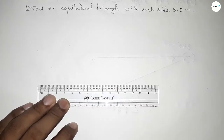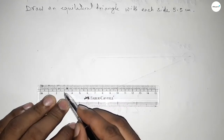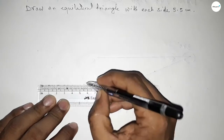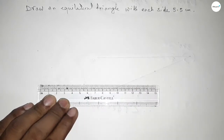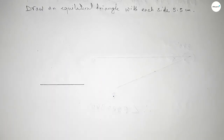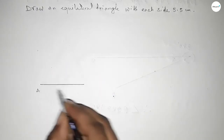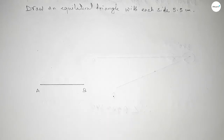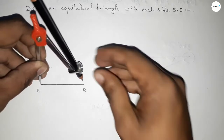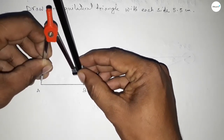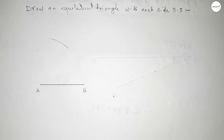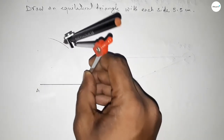Starting from 0, then 1, 2, 3, 4, 5, and this is 5.5 centimeters. So first drawing a line of length 5.5 centimeters. This is A and B, so line AB equals 5.5 centimeters. Now taking the length AB by compass and drawing an arc with the same length.